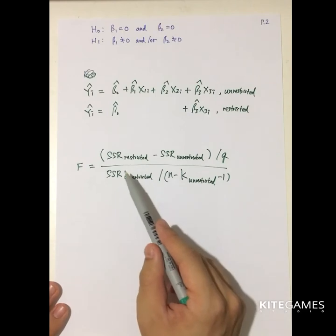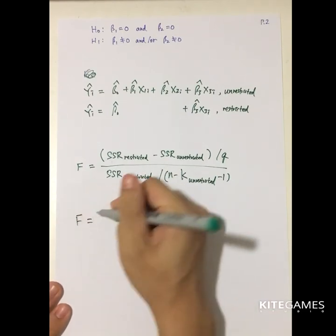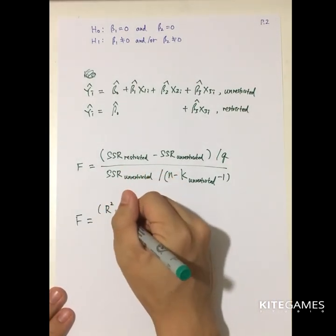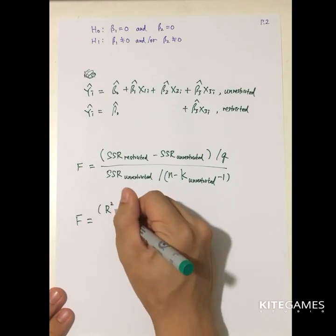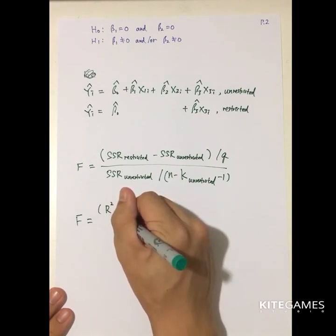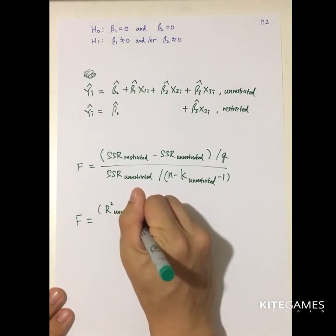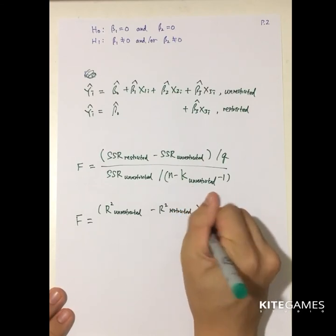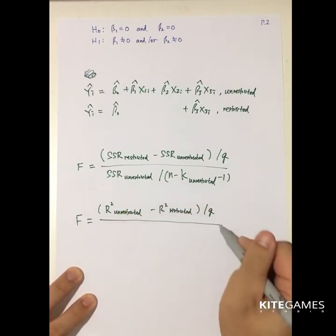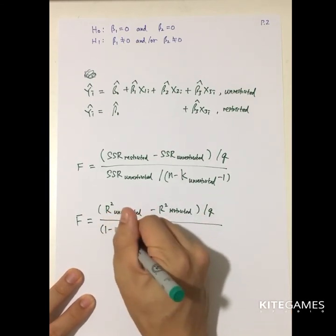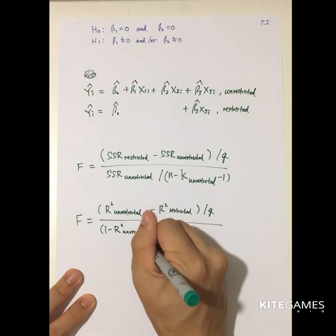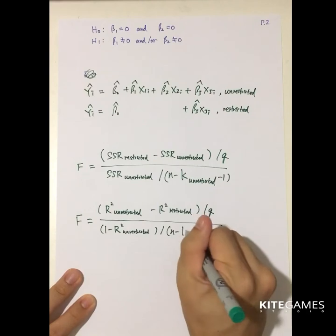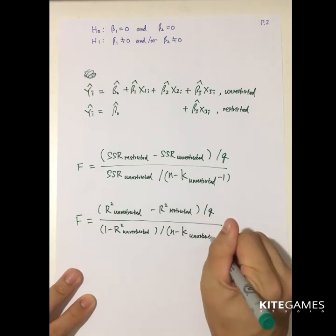Sometimes you cannot find the value of SSR, so you can use an equivalent definition based on R-squared. The F-statistic can also be computed as: R²_unrestricted minus R²_restricted, divided by Q (the number of restrictions); then divided by (1 minus R²_unrestricted) divided by (N minus K minus 1) of the unrestricted equation.